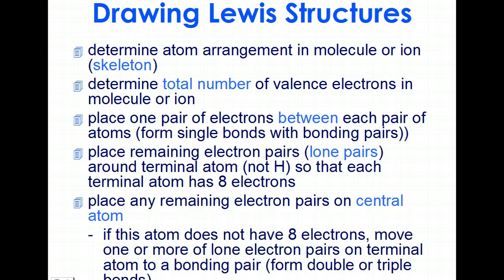We start by putting one pair of electrons between each of the atoms so that we can form that skeleton. Then we place the remaining electron pairs, lone pairs, around the terminal atoms, excluding hydrogen, so that each of the terminal atoms has eight electrons or four pairs. If there are any electrons remaining, those are placed on the central atom. If for some reason the central atom does not have four pairs of electrons, we will form a multiple bond, either a double or a triple bond, in order to make that atom also be meeting the octet rule.